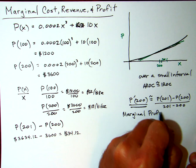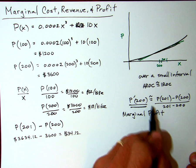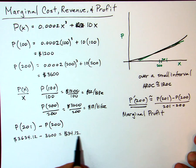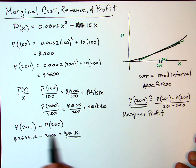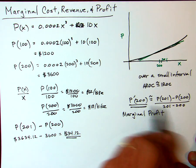In other words, we can basically use the derivative to estimate this, the cost, in this case the profit of the, or the profit that we would make off the 201st bicycle. So let's see how we would do that.